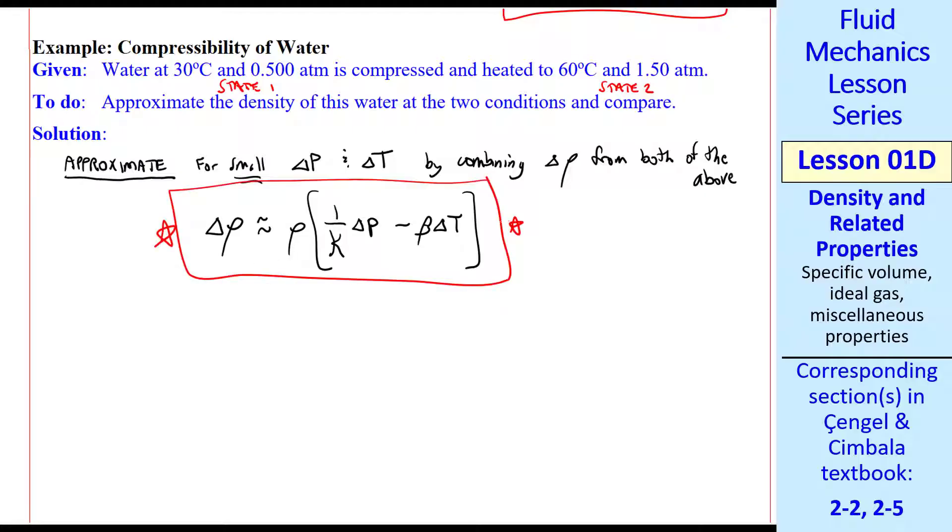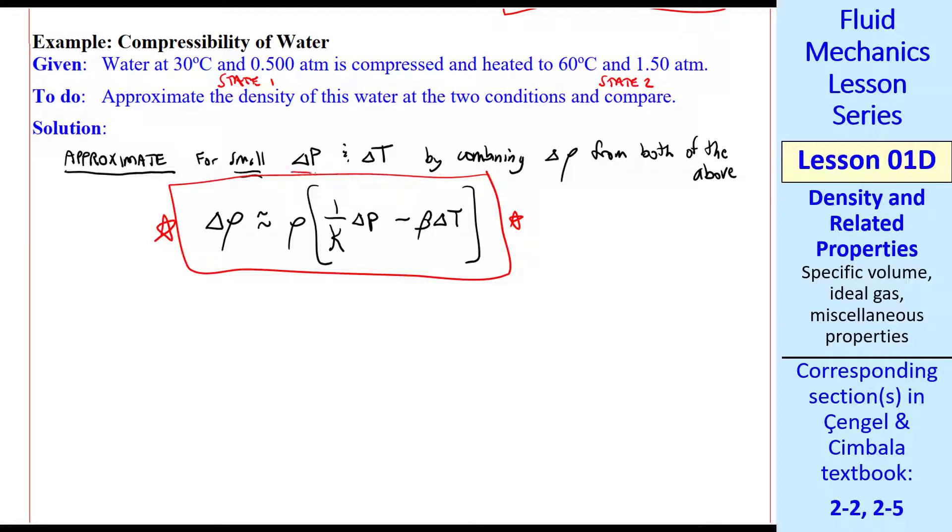So this equation allows us to calculate the change of density for both a change of pressure and a change of temperature, keeping in mind that we're assuming small delta p and delta T. You'd have to do a differential analysis to do this exactly.